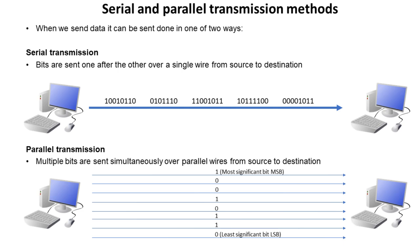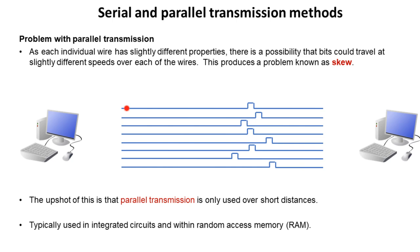At first glance it would seem that parallel transmission is the preferred method, as we can obviously send more data at once. But the situation is not quite as simple as this. As these are actual physical wires, every single one of them has slightly different properties and slightly different resistances. There is a possibility that the bits could actually arrive at different times — this problem is known as skew. As a result, parallel transmission is only used over short distances, typically inside a computer system, for example in integrated circuits and within the random access memory.